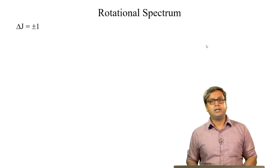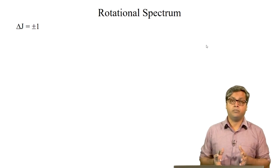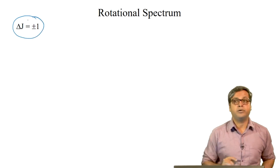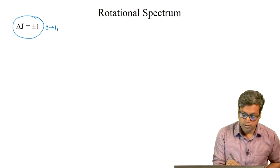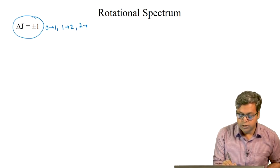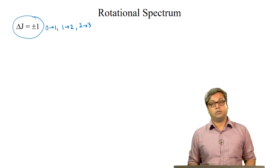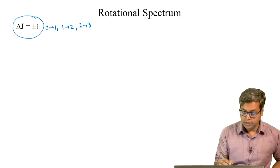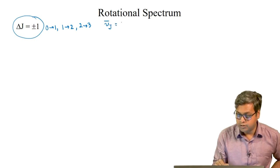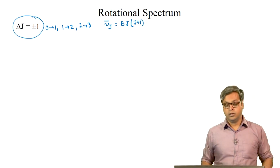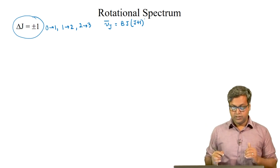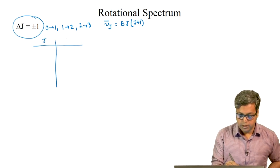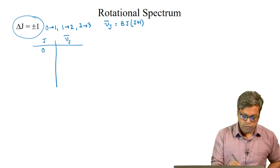Now let us look into the transitions observed in the rotational spectrum of a diatomic rigid rotor with a permanent dipole moment. Since the selection rule is delta J equals plus or minus 1, transitions like 0 to 1, 1 to 2, 2 to 3, and so on are allowed. Let us look again at the energies of the different rotational energy levels. We know that nu bar J equals B times J times J plus 1. Let us make a table with J in one column and nu bar J in the other: for J equals 0, 1, 2, 3, 4, the energies are 0, 2B, 6B, 12B, and 20B respectively.